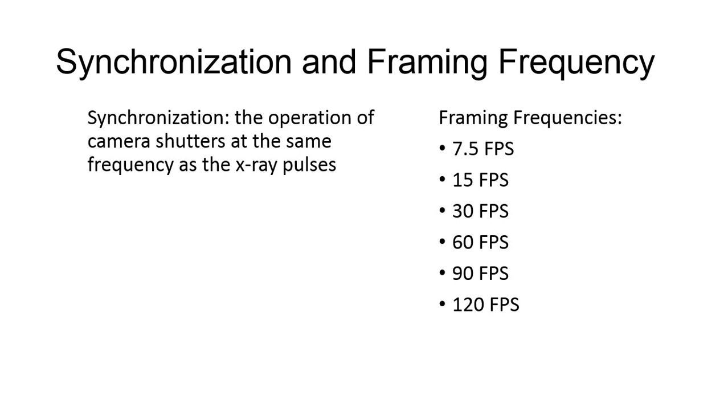When we talk about framing frequency, this is the number of frames per second, or FPS, and is usually in divisions of 60. 7.5, 15, 30, 60, 90, and 120 are all examples. This framing sequence provides the motion aspect as the operator later reviews the examination on the cine projector.